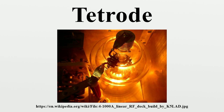How it works: The tetrode functions in a similar way to the triode, from which it was developed. A current through the heater or filament heats the cathode, which causes it to emit electrons by thermionic emission. A positive voltage is applied between the plate and cathode, causing a flow of electrons from the cathode to plate through the two grids. A varying voltage applied to the control grid can control this current, causing variations in the plate current.